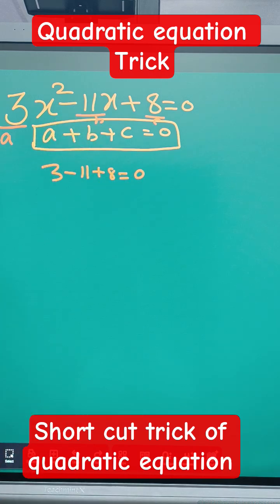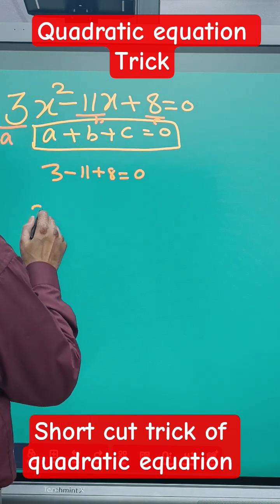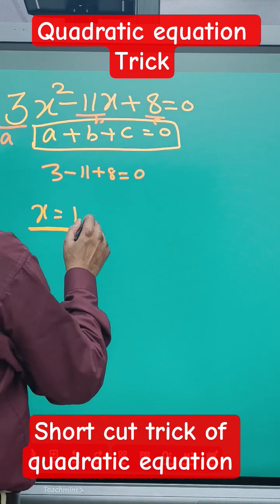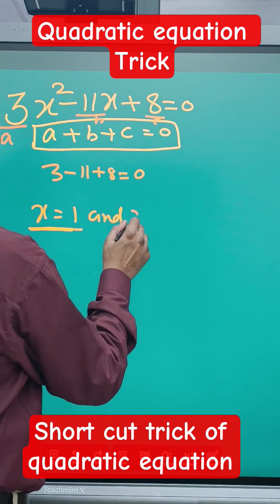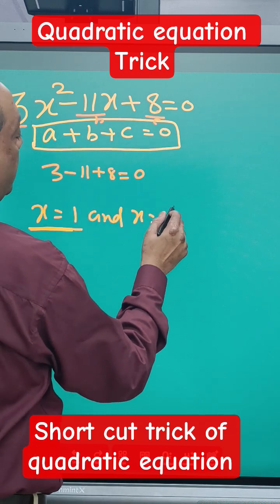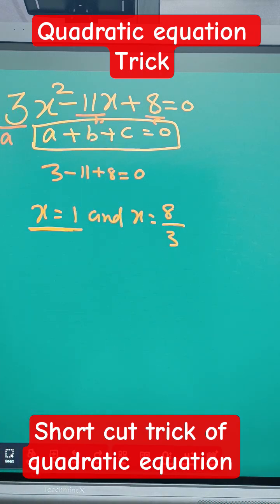Whenever a + b + c = 0, we can directly write the answer: x = 1. The first answer is x = 1, and x equals whatever c over a - 8 over 3. So this will be our answer. We can find this directly.